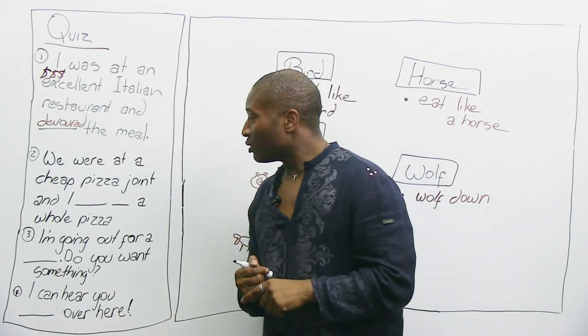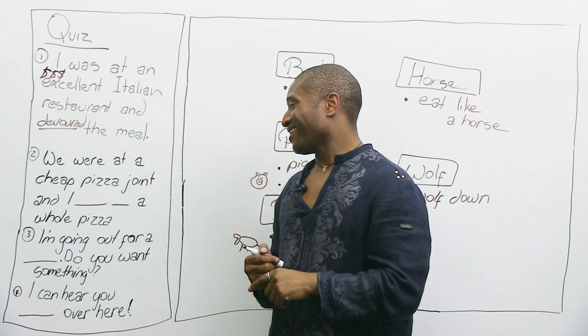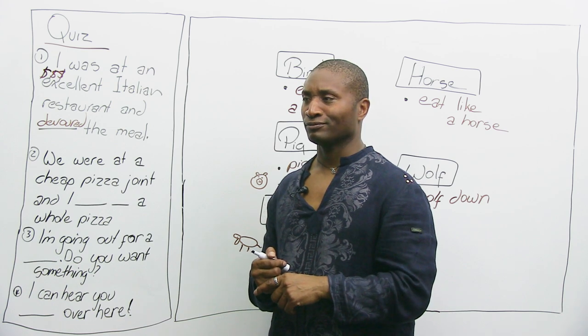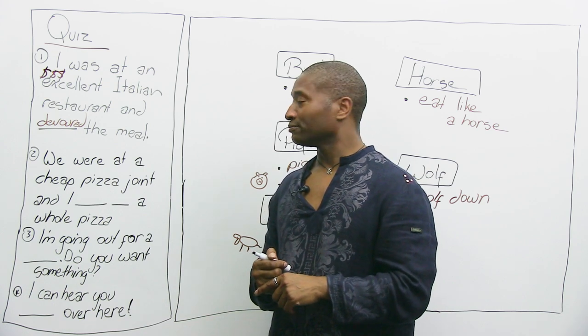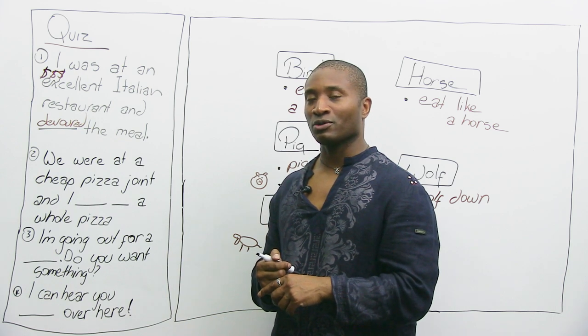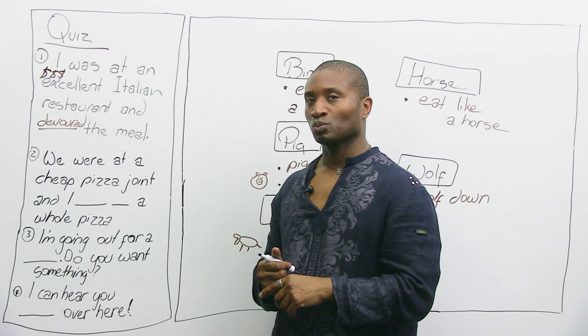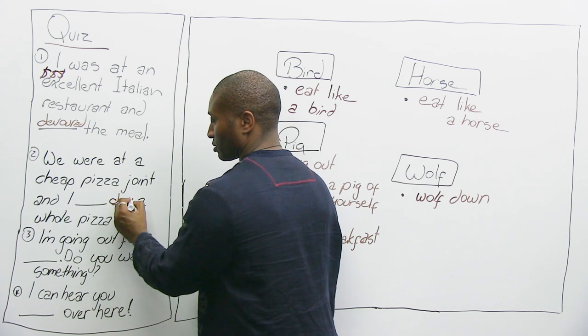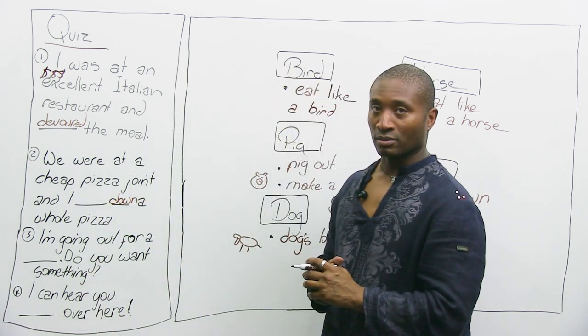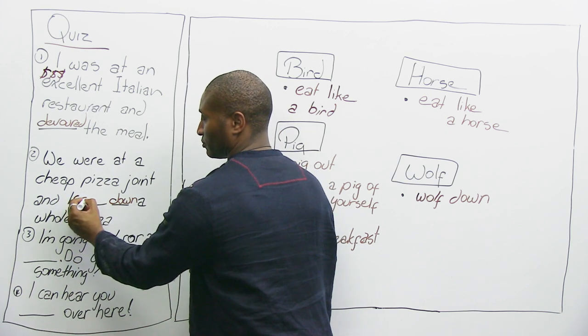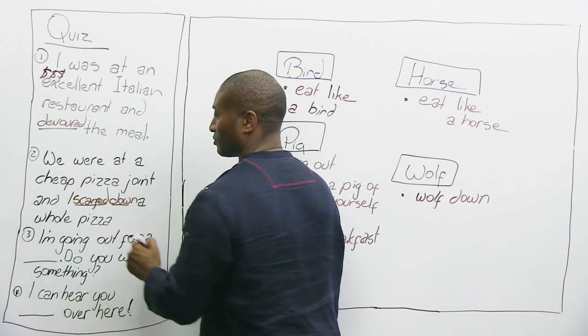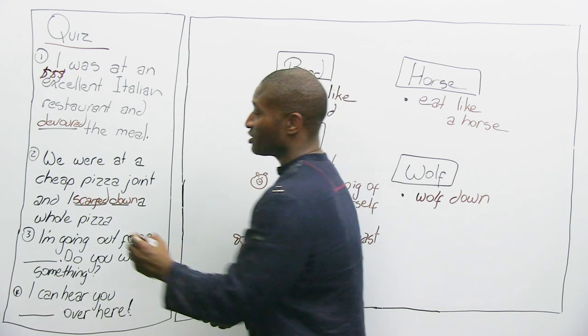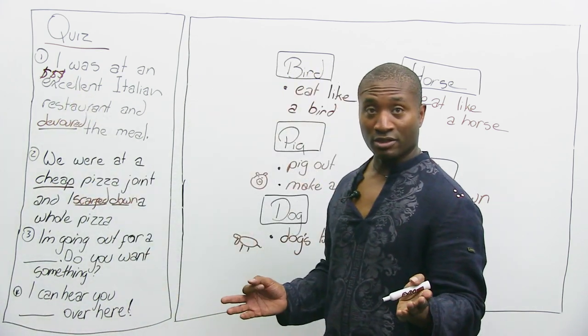What about this one? We were at a cheap pizza joint, and I something'd a whole pizza. Hmm. It's not winter, but I sure could use something if I was cold. I'll give you a hint. I knew you'd get it. Scarfed down. Remember, we talked about scarfing down pizza and beer from cheap places, because this one is no money, that's a lot of money. There's the difference.